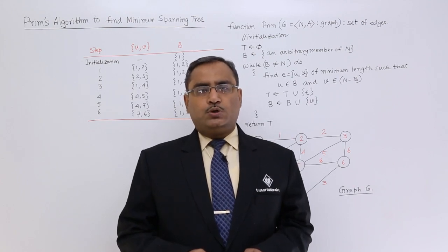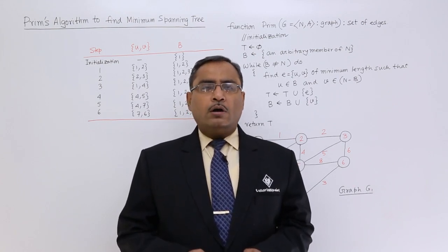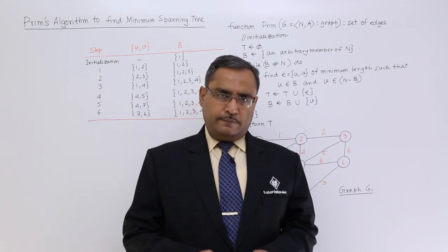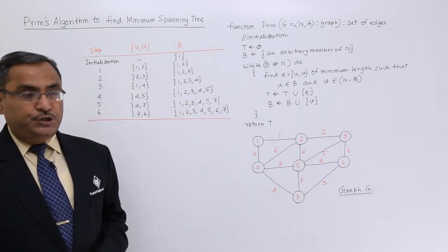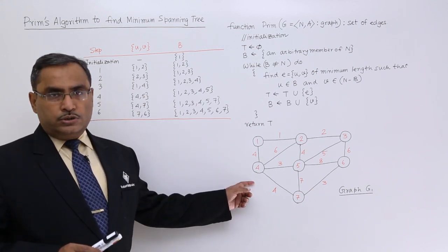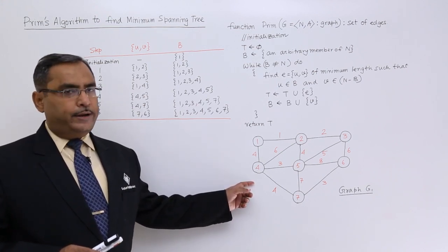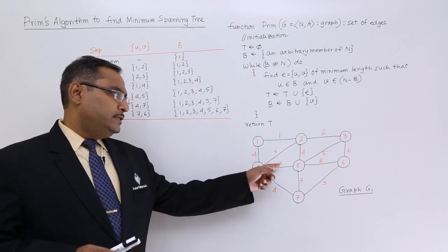Now, let us execute Prim's algorithm on a given graph. This is graph G1, having 7 nodes. It is an undirected weighted graph with these weightages given.